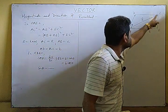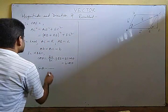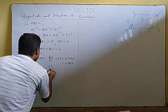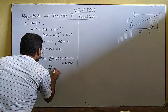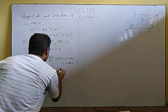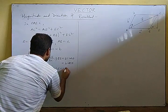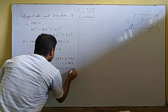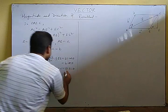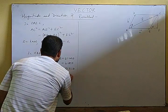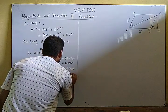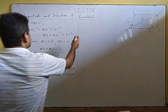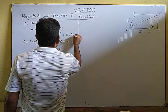Similarly using the sine law in triangle BEC: sin θ = perpendicular / hypotenuse = EC / BC. Therefore EC = BC sin θ = B sin θ. So EC = B sin θ.